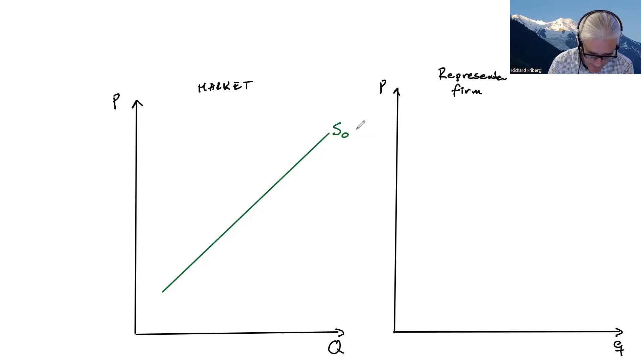There's a market demand, which we could call D0. So given that there's an equilibrium market quantity in this market, and there's an equilibrium price. So P0 is the price that's established in this market.